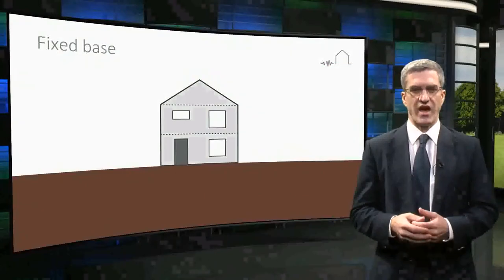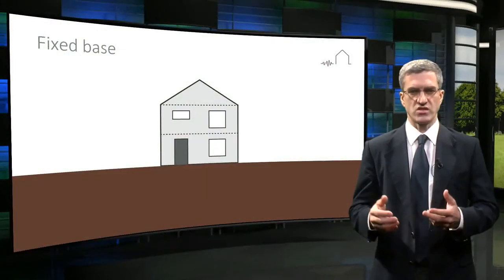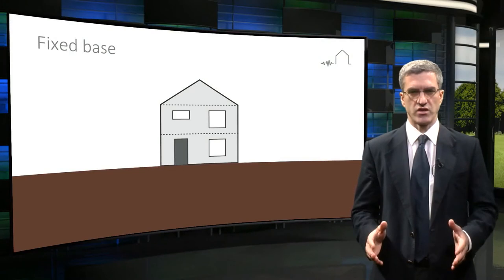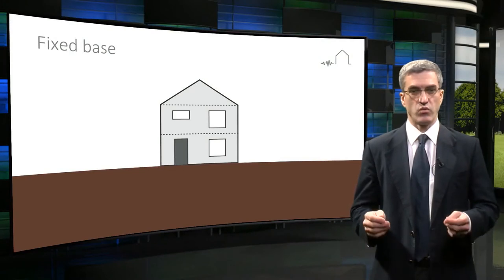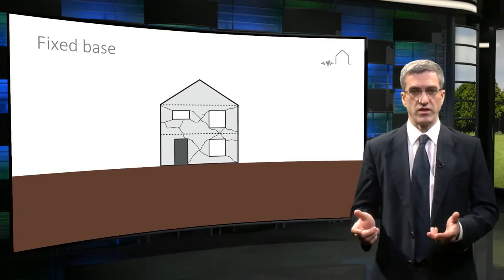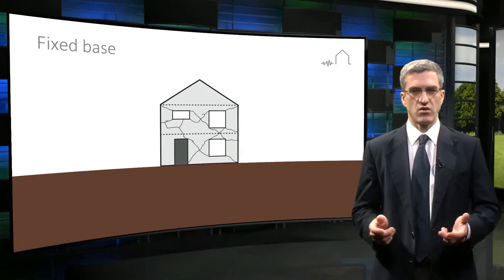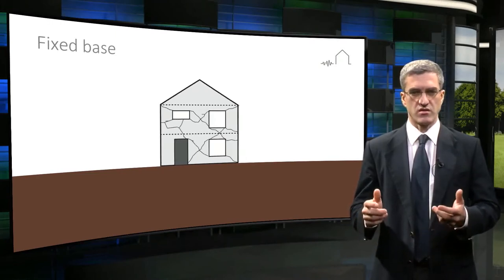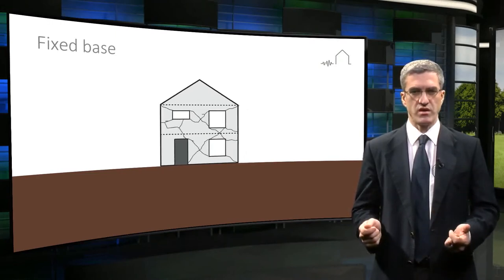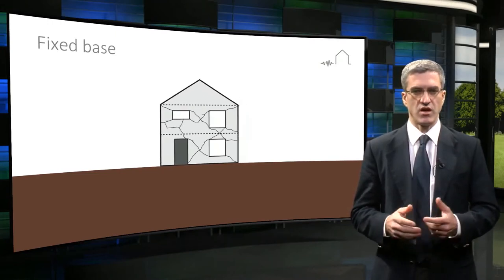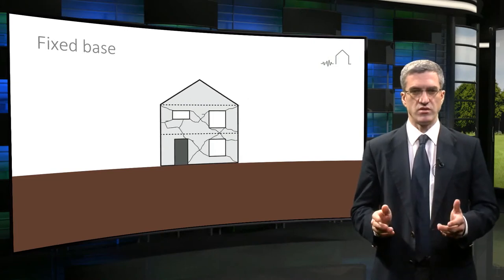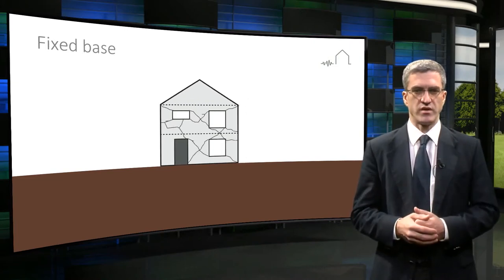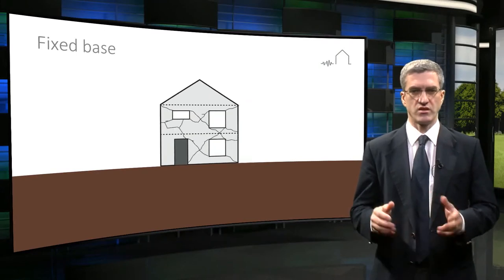Conventionally, a house is fixed to the ground by its foundation and when the ground shakes, the building must resist the sudden horizontal displacements. Cracks may appear and become larger. Chimneys, gables and parapets may break. There may even be partial or whole building collapse.